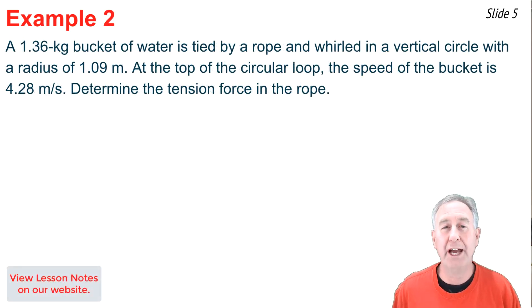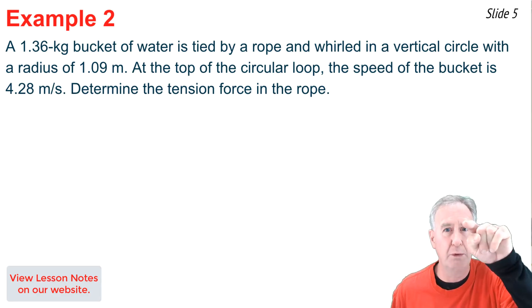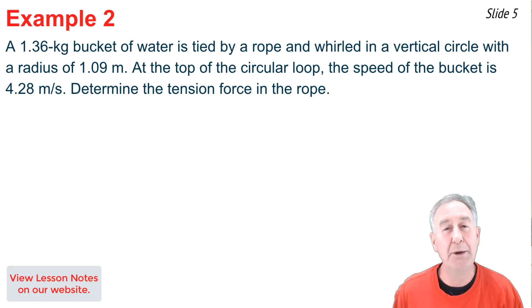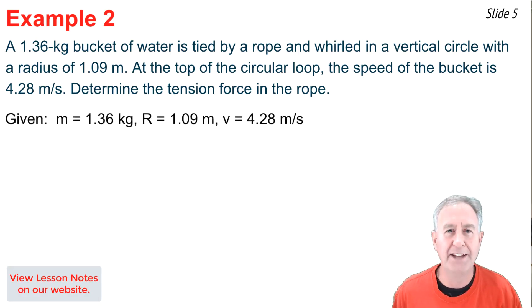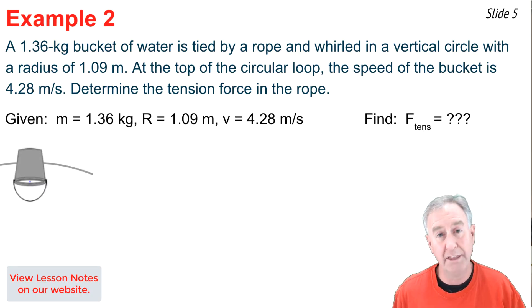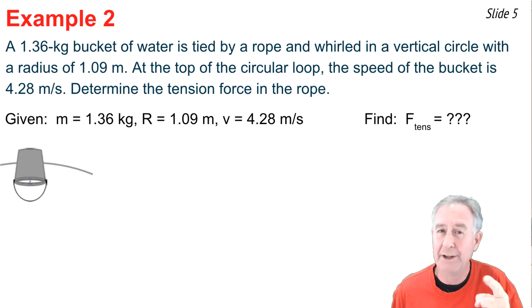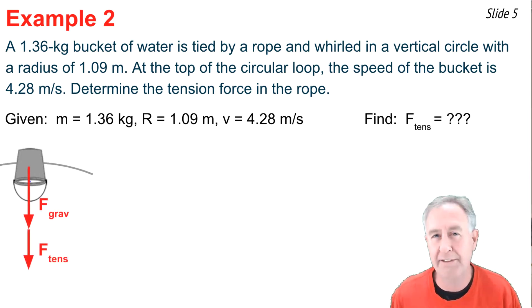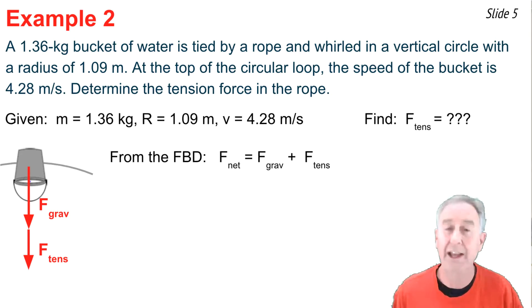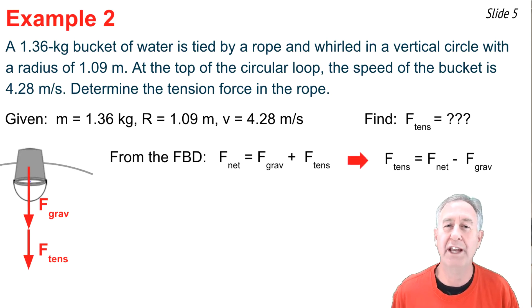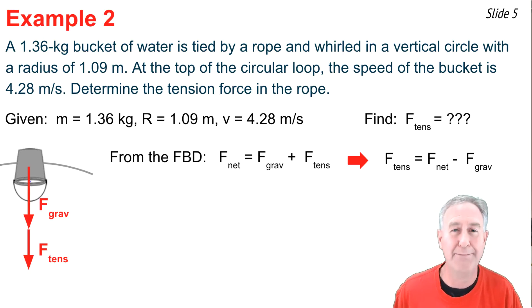Our second example is about a bucket of water tied by a rope and whirled in a vertical circle. I know the mass of the bucket and the radius of the circle, and I'm focusing on the top of the loop where the speed is 4.28 m/s. I want to determine the tension of the rope. At the top of the loop, gravity is down and since the rope is held below the bucket at that point, the rope also pulls down — so both F_grav and F_tension are downward. The F_net expression is therefore F_grav + F_tension. Rearranging: F_tension = F_net − F_grav. If I can find F_grav and F_net, I can solve for F_tension.